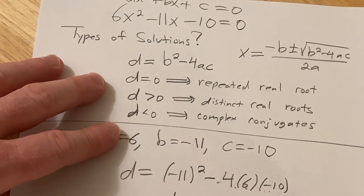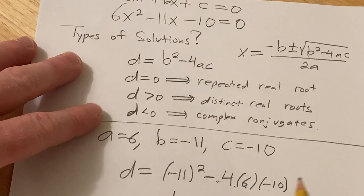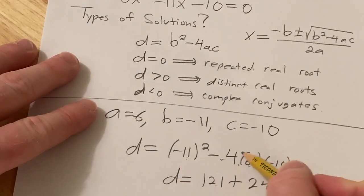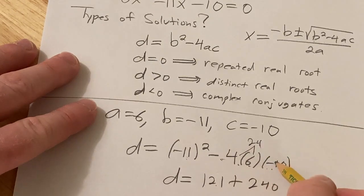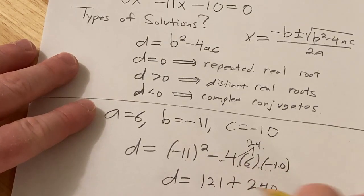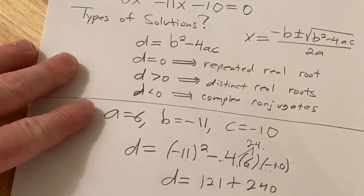So d is equal to 361. Yeah, actually easier to do without a calculator because that square is 121 from memory, and 24 times 10 is 240, and they're both negative, so boom. And 121 plus 240 is 361.